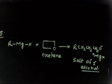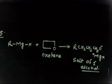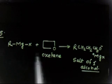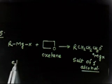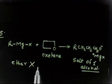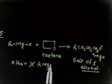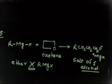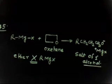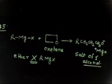You have to provide a mechanism for this reaction and also account for the fact that most ethers do not react with Grignard reagents. So why does this ether — Oxetane — react with the Grignard reagent when most ethers do not? No reaction normally, but in this case there is a reaction. Write the mechanism and tell me what is the driving force for this reaction. Let us take one minute.